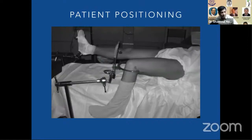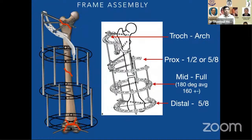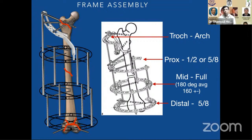We can place the patient on a usual traction table, or apply traction with the rings so we can easily get all the C-arm images in this position. In the proximal trochanteric area we use arches with multiple pins. For fractures in the proximal, mid, or distal part: arches for the proximal, half rings or 5/8 rings in the proximal thigh to avoid injury to the genitals, full rings in the mid part, and 5/8 rings distally to avoid knee stiffness.